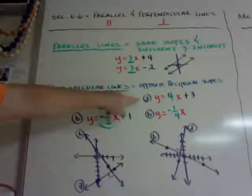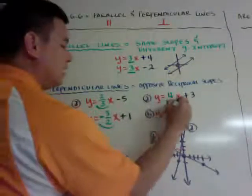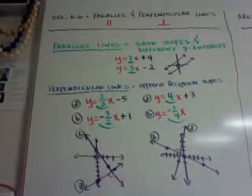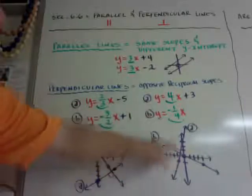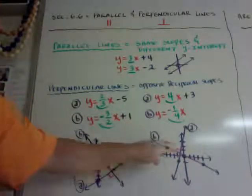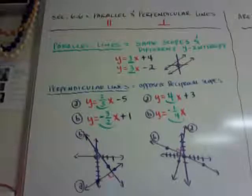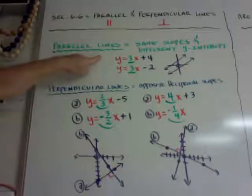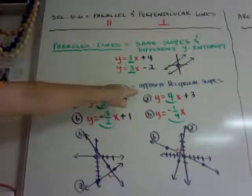Here's another example. y equals 4x, and the opposite reciprocal is going to be negative 1 fourth x. You can see line A and line B, and again it forms a 90-degree angle. So again: parallel lines have the same slope and different y-intercept; perpendicular lines have opposite reciprocal slopes.